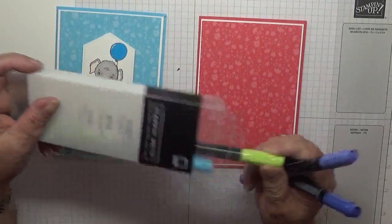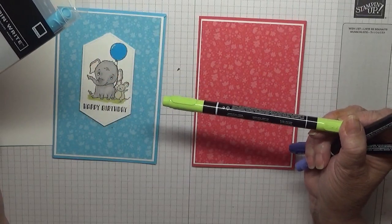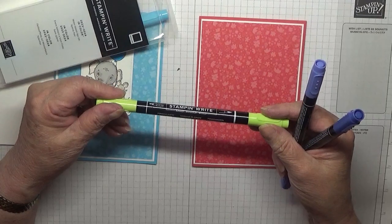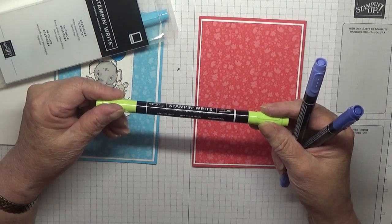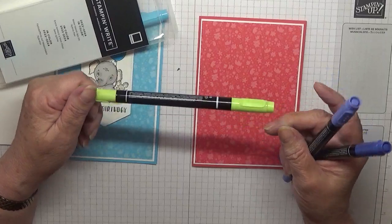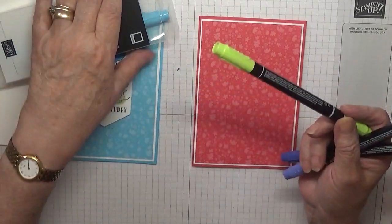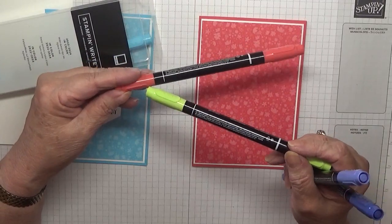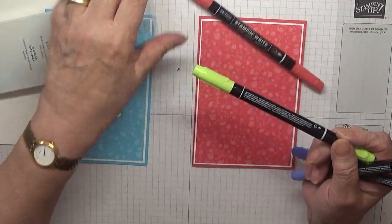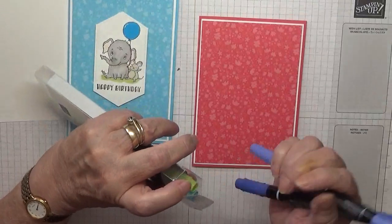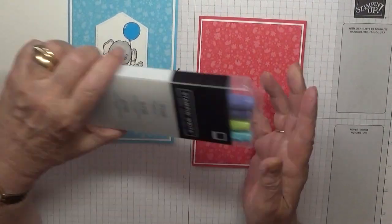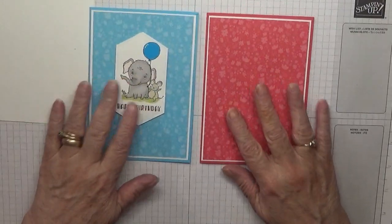The green is called Parakeet Party. That was out of stock when I went to order it. The red I'm not ordering because it reminds me, it's orangey and it reminds me of Poppy Parade. I don't use Poppy Parade very much, so I'm not getting that one.